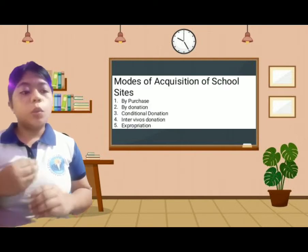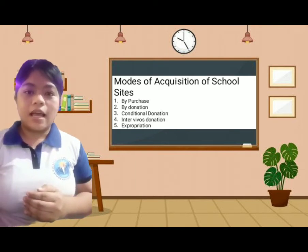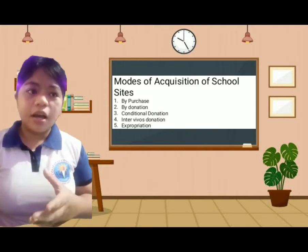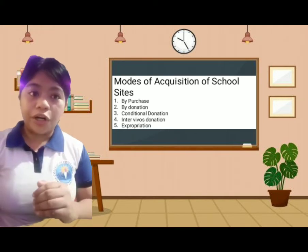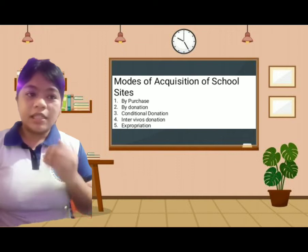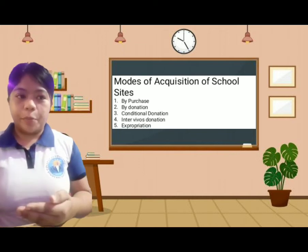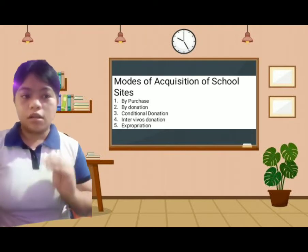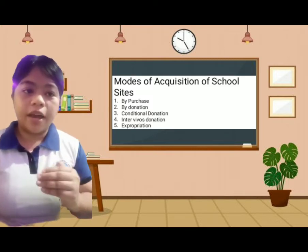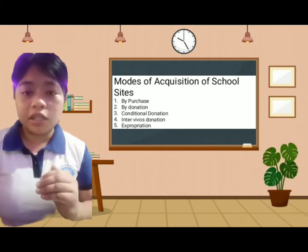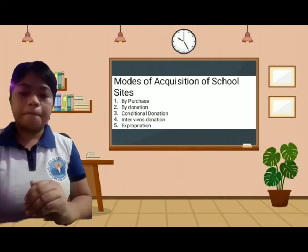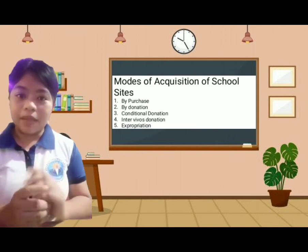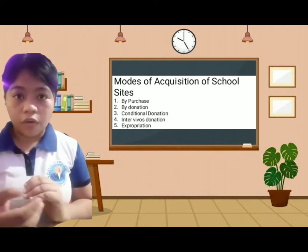Now let's proceed about the modes of acquisition of a school site. The first one is purchase — a direct purchase from the legal owner who voluntarily sells it at an agreed price. The source of funds is the capital outlay of the Department of Education, the local school board fund, or operation funded by the LGU.